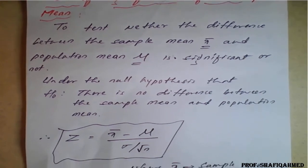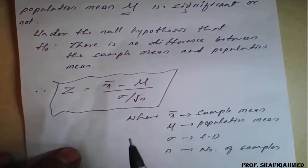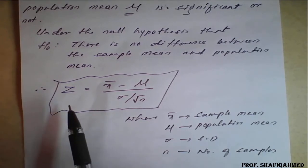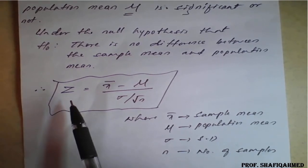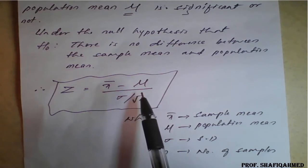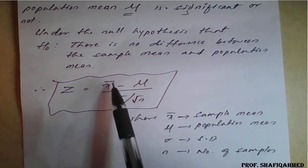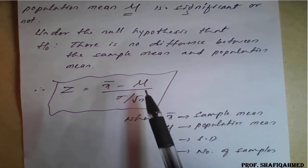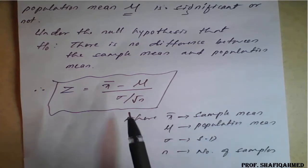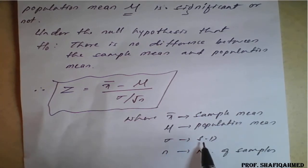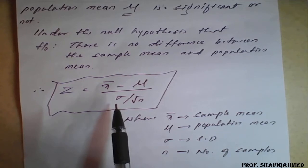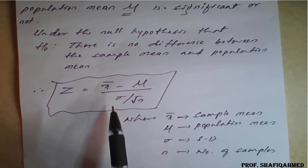Here we have the formula to solve those things. The formula for sample mean is z equals x̄ minus μ divided by standard deviation divided by root n, where x̄ is the sample mean, μ is the population mean, and standard deviation is the population standard deviation, and sometimes s will come which stands for standard deviation of sample also.